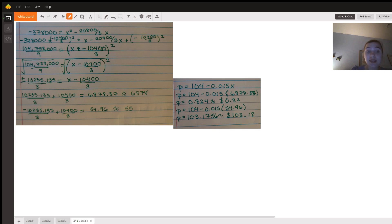And then we just add 10,400 over 3 to both sides, and we get these two numbers: 6,878.37 and 54.96. Now we can just take those x's and plug them in to our equation for p right here, leaving us with 82 cents and $103.18.